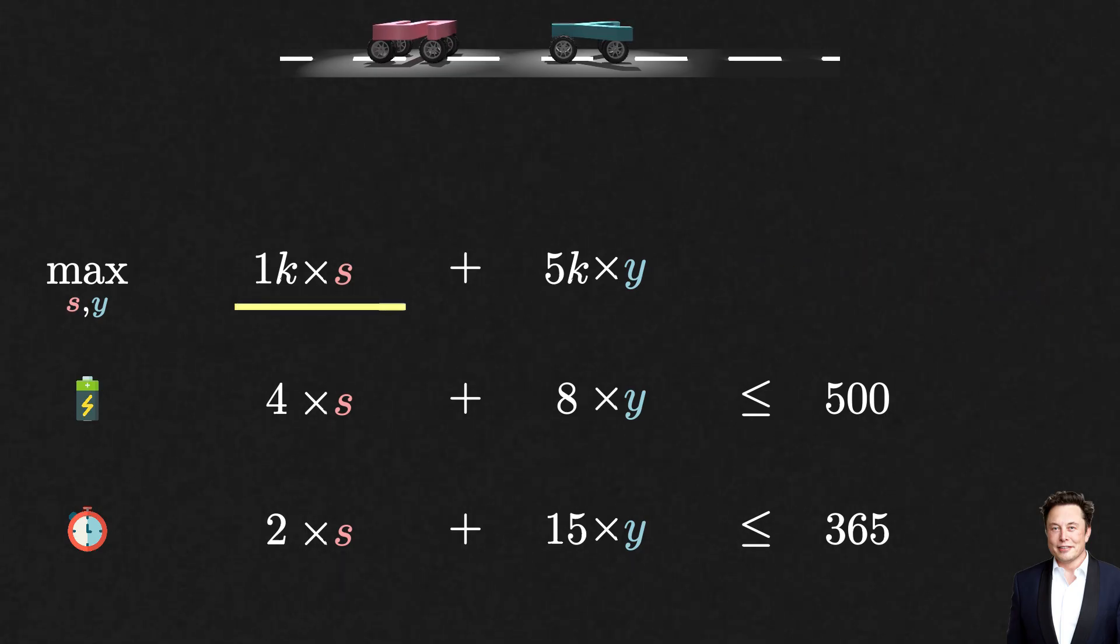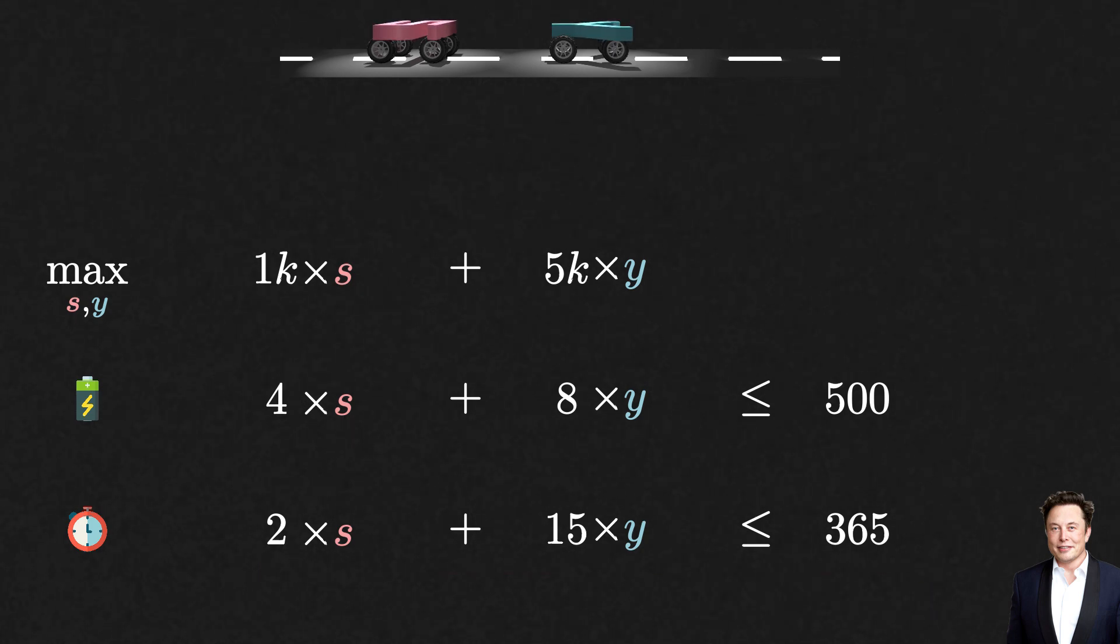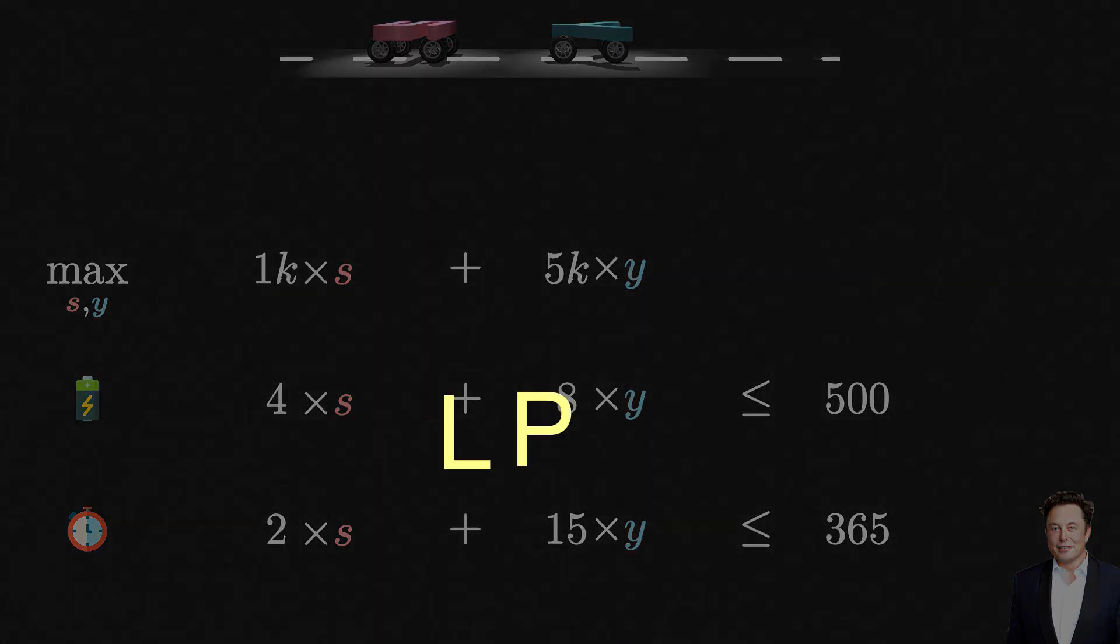This function that we want to maximize is called the objective, and these inequalities that our decision variables should satisfy are called constraints. Both the objective and constraints are linear functions, and for this reason, problems like these are called LPs, or linear programs.